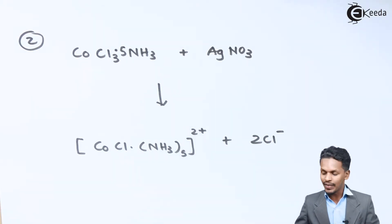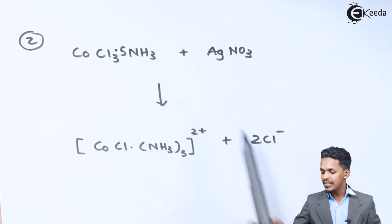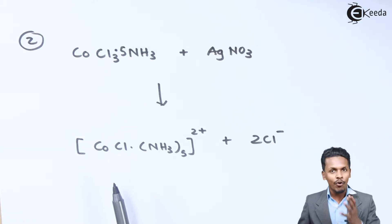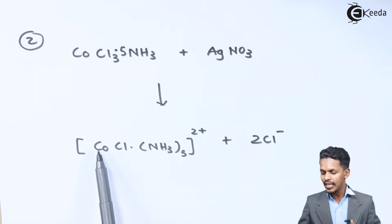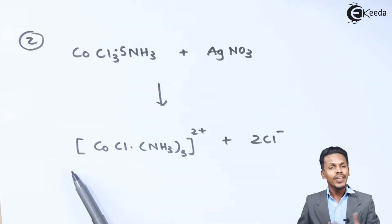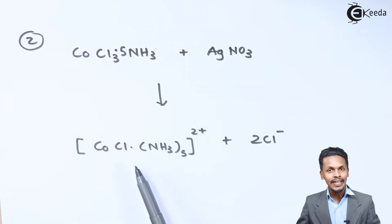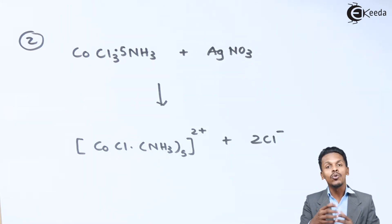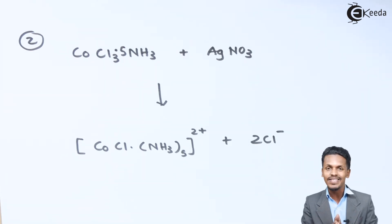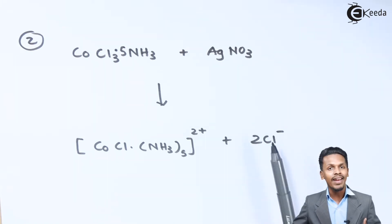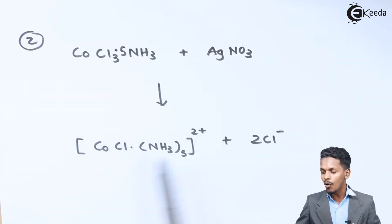The complex carries a 2+ charge. The coordination number is again six — five NH₃ groups plus one Cl gives six groups around cobalt. AgNO₃ precipitates out two Cl⁻ ions, giving three ions total: one complex ion and two Cl⁻ ions.